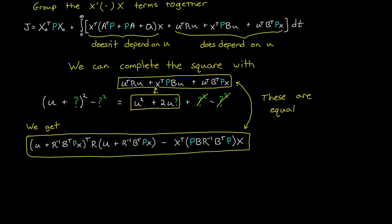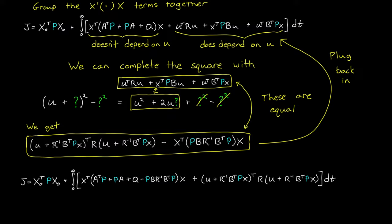So now we can plug this thing back into our cost function, and we get this result. Remember, again, we haven't changed the value of J. We've just reordered it in a fancy way. And I know that this looks a mess, but it's really super easy to minimize cost at this point.